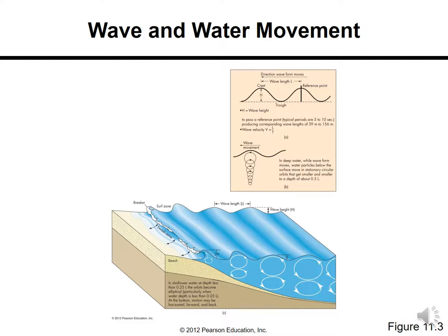Waves move from deep marine conditions toward shallow marine conditions. In deep water, waves have high velocity; as they approach the shoreline, velocity decreases and the bathymetry becomes shallower. In the deep ocean, waves have low amplitude, but at the shoreline, amplitude is high — so wave height increases as waves move from deep to shallow water. Waves become unstable when the wave height is greater than 10% of the wavelength.